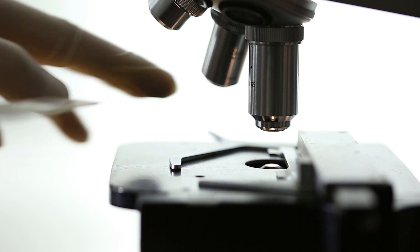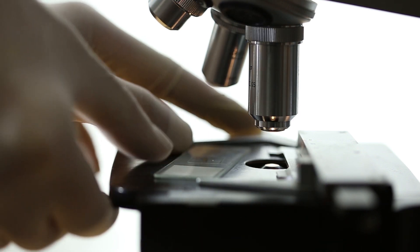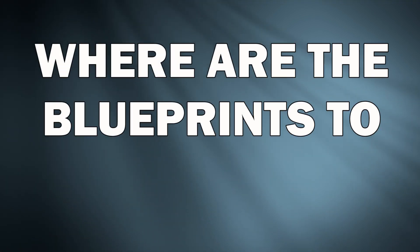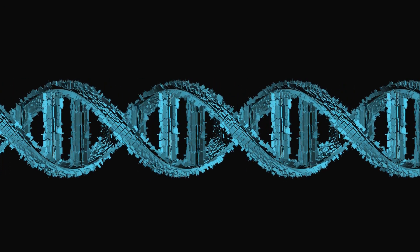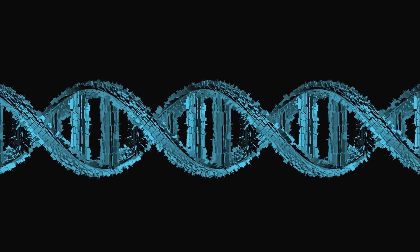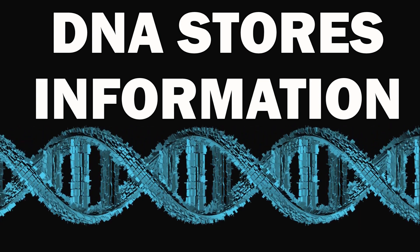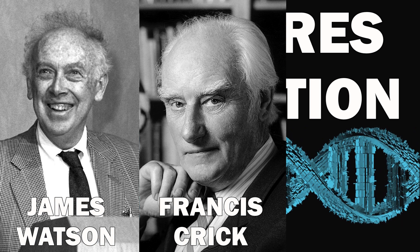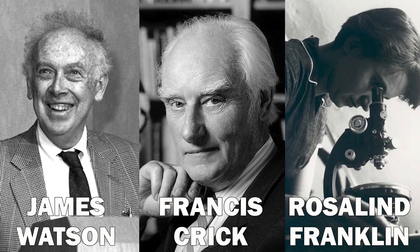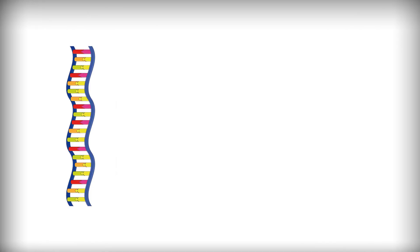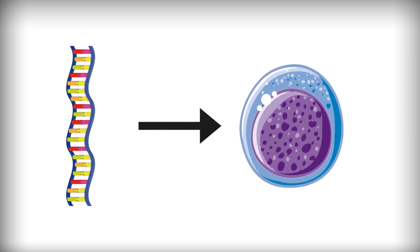The next important characteristic of living things was also discovered during the 20th century, and it answers a very interesting question: if cells are that complex, where are the blueprints to build a cell? Well, the answer lies directly inside cells. They contain long molecules called DNA. DNA — or sometimes RNA, depending on the organism — is the storage device of life. The structure of DNA was discovered by Watson, Crick, and Franklin, although we now consider this chapter of science to be highly controversial.